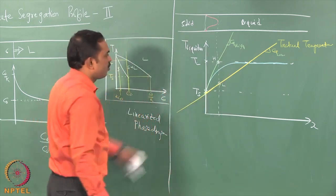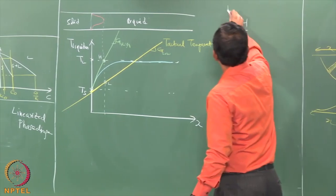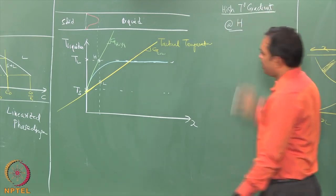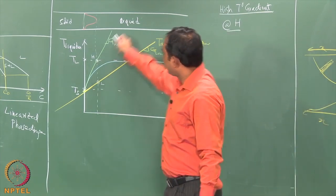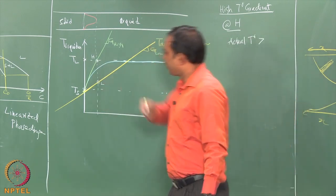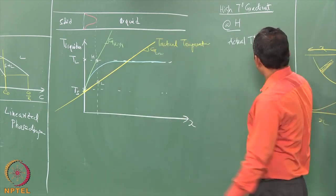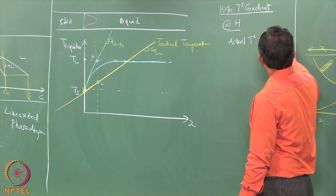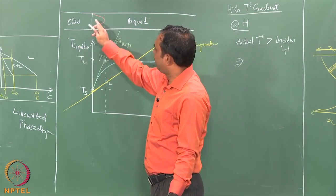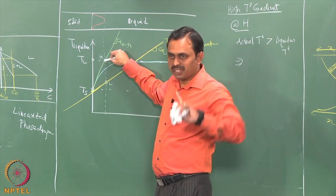We can inspect what is happening at these two points. At point H, the situation represents high temperature gradient. Under this situation at H, the actual temperature is higher than the liquidus temperature — the actual temperature line is above the liquidus temperature line. This implies that the solid which has been perturbed to form a bulge is finding itself at a temperature that is supposed to be in a fully liquid region, so the solid is not stable and is supposed to melt back.